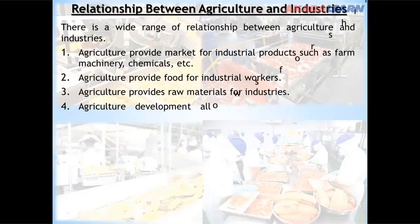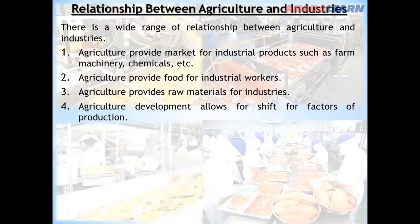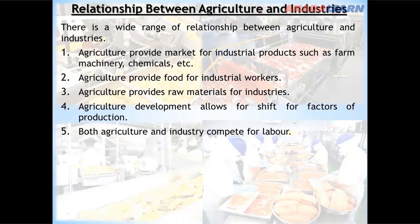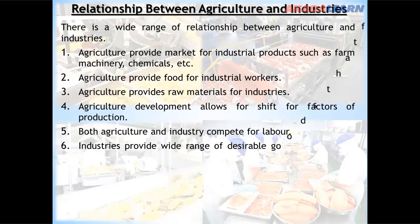Agricultural development allows for a shift in factors of production. Both agriculture and industry compete for labor. Industry also provides a wide range of desirable goods that farmers want to buy.